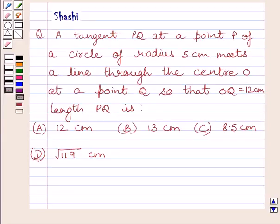Hi and welcome to the session. I am Shashi and I am going to help you with the following question. Question says, a tangent PQ at a point P of a circle of radius 5 cm meets a line through the center O at a point Q so that OQ is equal to 12 cm. Length PQ is: a) 12 cm, b) 13 cm, c) 8.5 cm, d) square root of 119 cm. We have to choose the correct answer here.